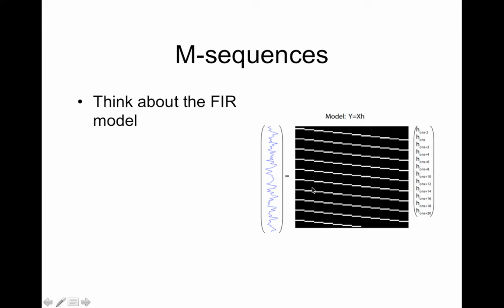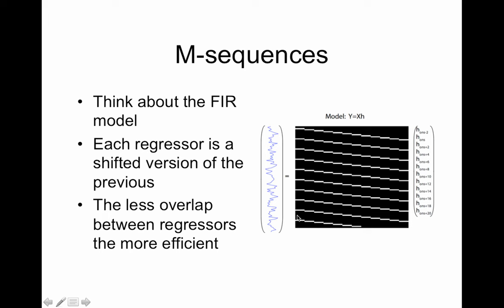M-sequences work along with this model. As we know this model works along with estimation because we're estimating the shape of our response and these parameters, these h's here, are the shape. You'll notice the end of the window for one stimulus starts to run into the beginning of the window for the next stimulus. That's not good because that means we're losing power in estimating the activation for this window here because it's competing with this window here.